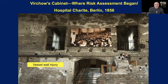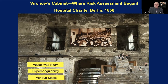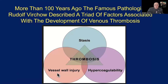The Virchow triad postulated that vessel wall injury, hypercoagulability, and venous stasis were the three factors associated with the development of venous blood clots. When one factor was present, the incidence was low. When two factors were present, it was higher. But when all three factors were present, the incidence of venous thromboembolism was likely.